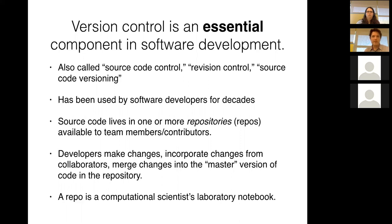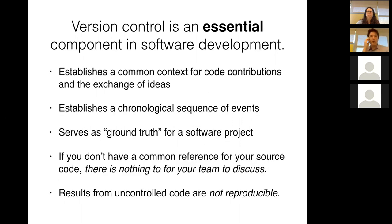A computational scientist can think of a repository with their source code as their laboratory notebook. This puts us into familiar territory with the scientific method — you write down what you do, you try to understand the processes you've been following, and you try to make it so somebody else can reproduce your results. The point of version control is establishing a common context for code contributions. If you have more than one person working on a software project and you're discussing code, you really want to make sure you're discussing the same code.